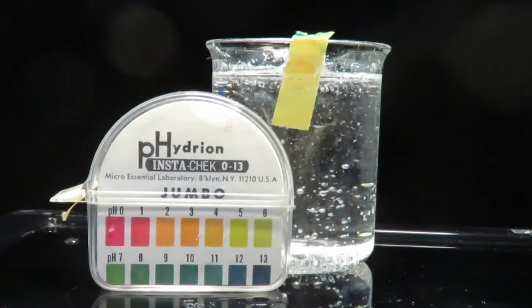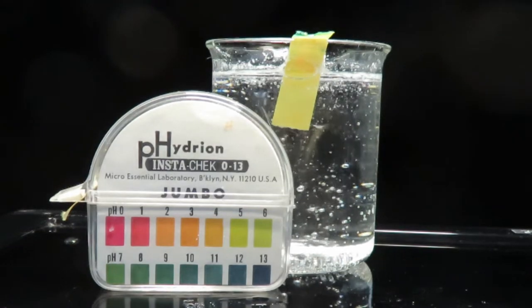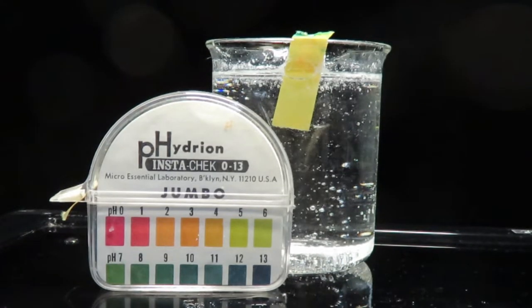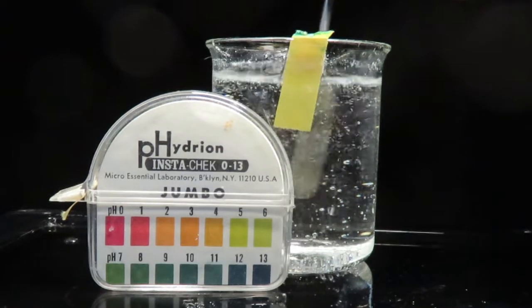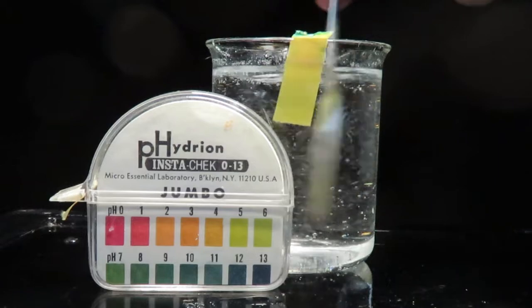And that's why we say that Alka-Seltzer is a buffer system. But in answer to our original question, the pH of Alka-Seltzer, right about 5.2. But that's not the entire story. It's also a buffer.